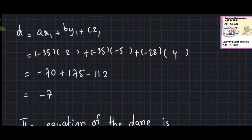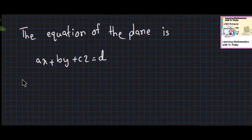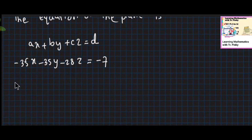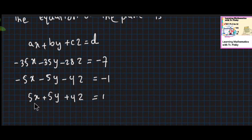The equation of the plane is minus 35x minus 35y minus 28z equals D. Dividing through by minus 7, we get 5x plus 5y plus 4z equal to 1. The equation simplifies to 5x plus 5y plus 4z equals 1.